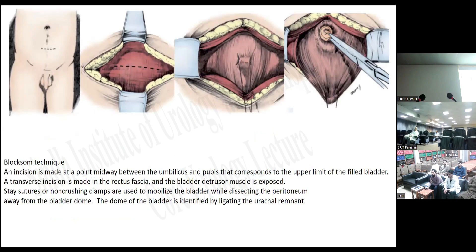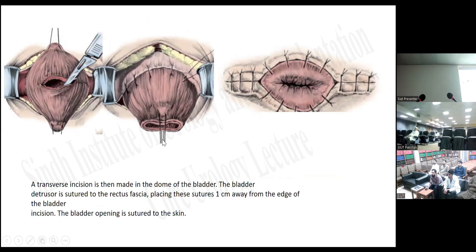The steps of the Blocksom technique: an incision is made at a point midway between the umbilicus and the pubis, corresponding to the upper limit of the filled bladder. A transverse incision is made in the rectus fascia and the bladder detrusor muscle is exposed. Stay sutures are placed to mobilize the bladder while dissecting the peritoneum. The dome of the bladder is identified by ligating the urachal remnants. A transverse incision is made in the dome of the bladder; the bladder detrusor is sutured to the rectus fascia, placing sutures one centimeter from the edge, and the bladder opening is sutured to the skin.